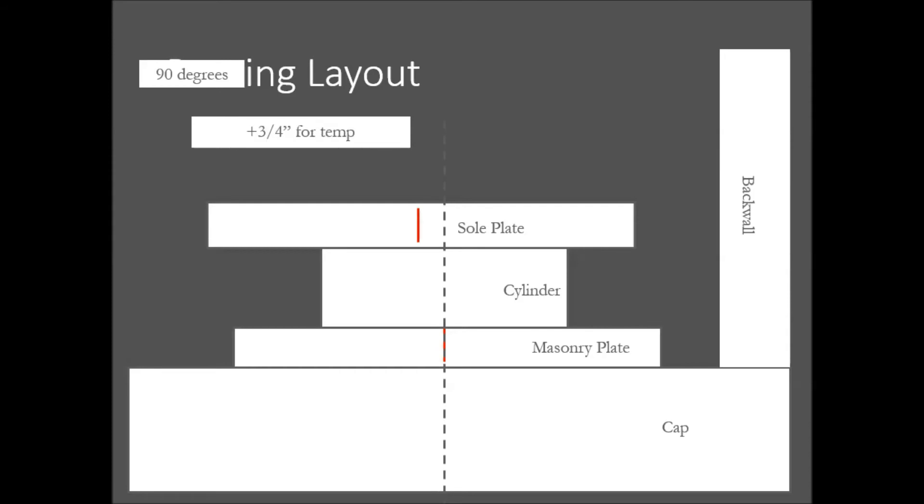At 90 degrees, the correction for thermal expansion was 3/4 of an inch. So we would slide the sole plate 3/4 of an inch in the positive direction or toward the free end of the beam. Negative 3/16 of an inch plus 3/4 of an inch effectively gives us a 9/16 of an inch correction at 90 degrees Fahrenheit.